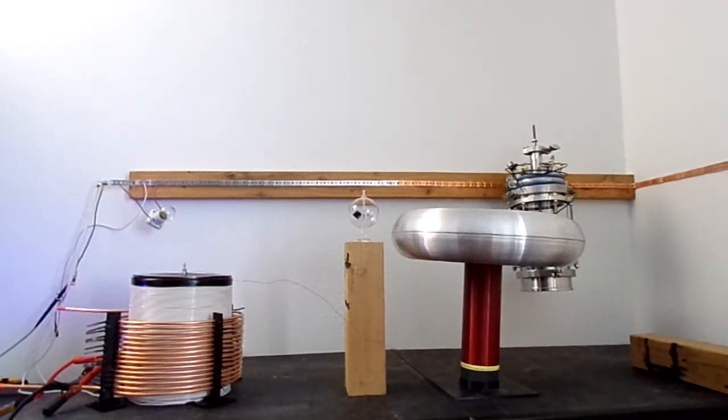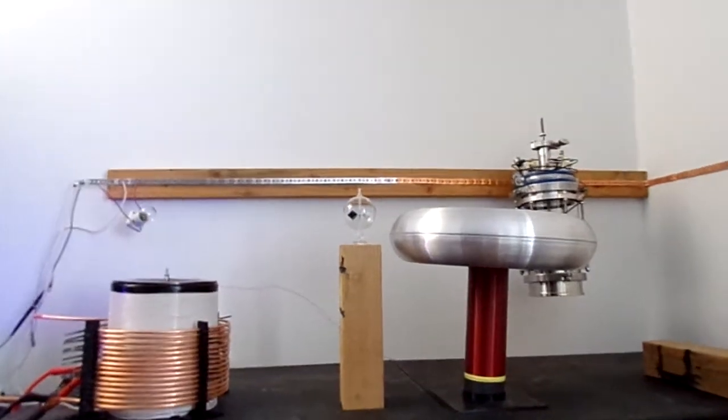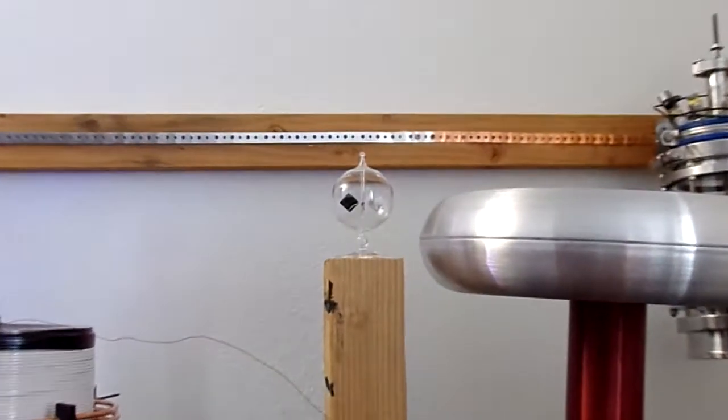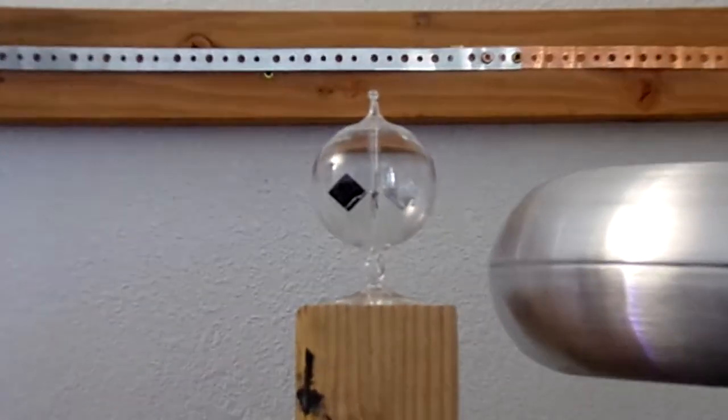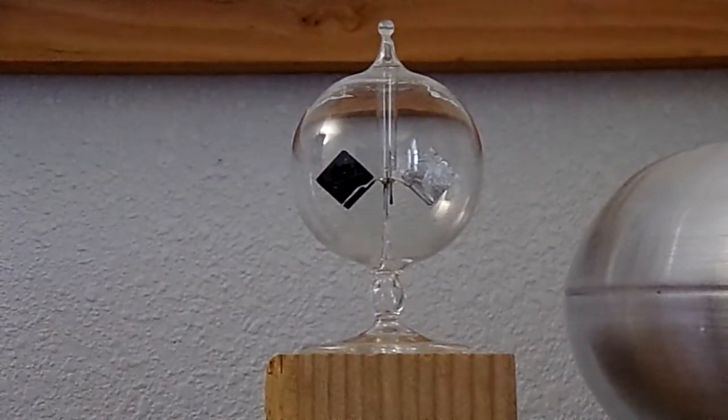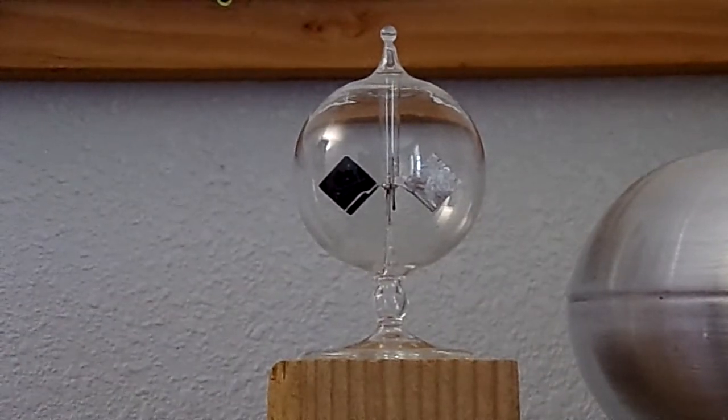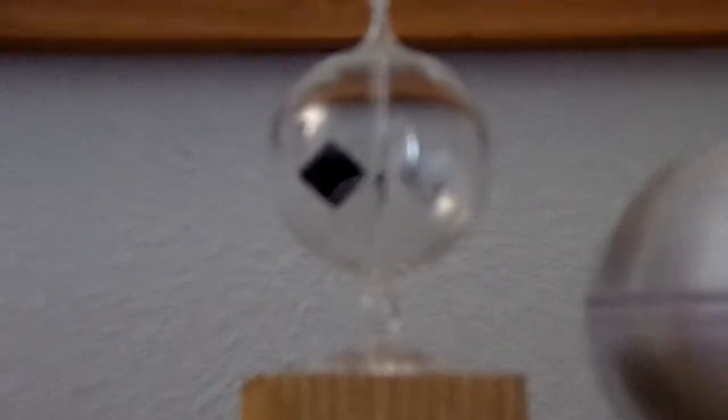All right, so we have the same Tesla magnifier system set up except now I put a tiny little radiometer here. Radiometer supposedly works by when sunlight hits it, it hits the black side and creates heat and that heat causes those vanes to spin.